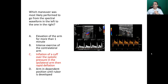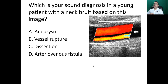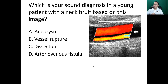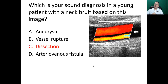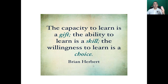Final question: which is your ultrasound diagnosis in a young patient with a neck bruit — a thrill is palpable — based on this image? The patient had a motorcycle accident. The image shows what we call a double-channel sign. Options: aneurysm, vessel rupture, dissection, or arteriovenous fistula. The answer is dissection — the intima has been detached from the media.